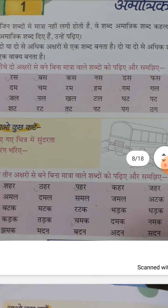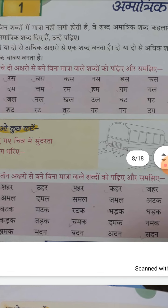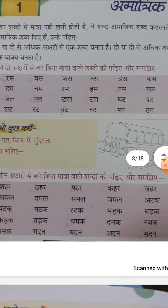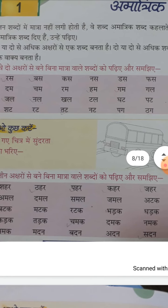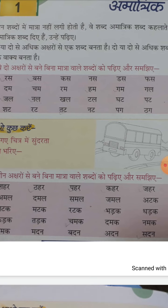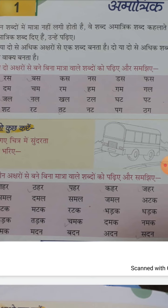अब और नीचे आते हैं — नीचे दिये गए तीन अक्षरों से बने बिना मात्रा वाले शब्दों को पढ़िये और समझिए। अभी हमने दो अक्षर वाले पढ़े, अब हम तीन अक्षर वाले पढ़ेंगे। शाहरा शहर, ठाहरा ठहर, पाराहा पहर, काहरा कहर, जाहरा जहर, कामाला कमल। देखिए — जाहर तक सब शब्द मिलते जुलते हैं, दूसरे से।